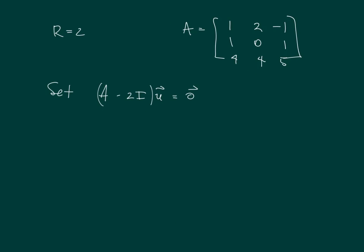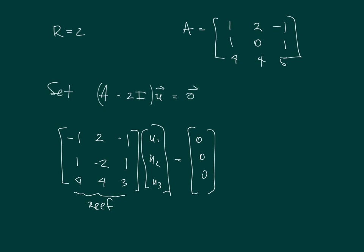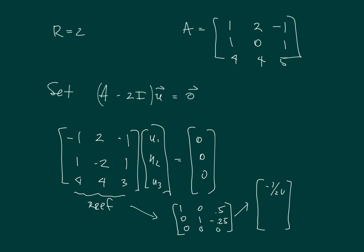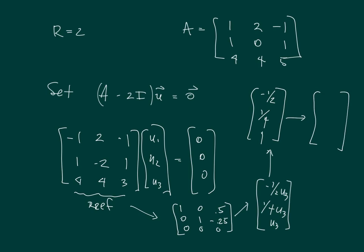For r equals 2, we set A minus 2 times the identity matrix multiplied by U equal to 0 — the same as subtracting 2 down the main diagonal. Taking RREF of that matrix gives us U1 equals minus one-half U3 and U2 equals one-fourth U3. Multiplying through by 4 to eliminate fractions gives the eigenvector minus 2, 1, 4, associated with eigenvalue r equals 2.